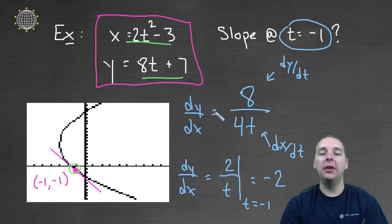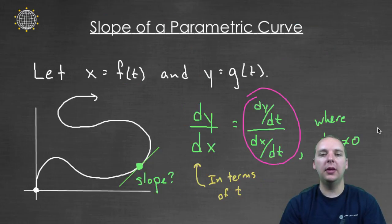So this slope would give you the slope at any given t value. We just plugged in a specific t value, t equals negative 1. And when you look at the pink line, that looks totally reasonable. A slope of negative 2 could certainly be the slope of this pink line. So basically, this is all we do. We take the derivative of y with respect to t, take the derivative of x with respect to t, divide them, and that will give you the slope of a parametric curve at any given value of t.